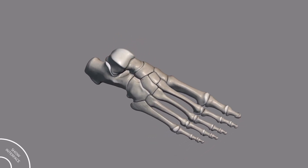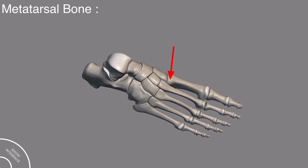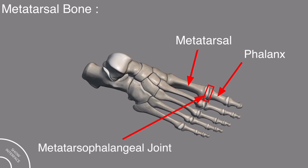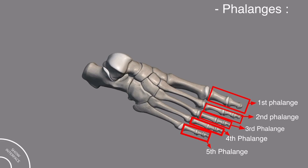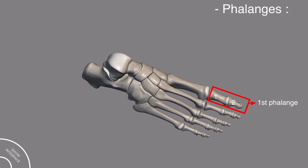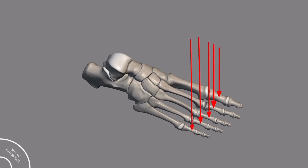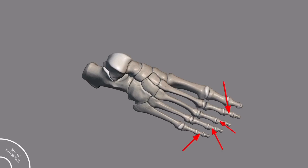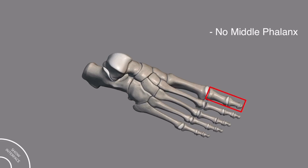Looking at one metatarsal bone as a representative: this is the base, this is the body, and this is the head of the metatarsal. Each metatarsal bone then forms the metatarsophalangeal joint with the phalanx bone. In each phalanges, there are three bones except the first phalanges which has two bones. The first bone is called the proximal phalanx, the last bone is the distal phalanx, and the bone between them is called the middle phalanx. There is no middle phalanx in the first phalanges of the foot.